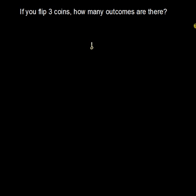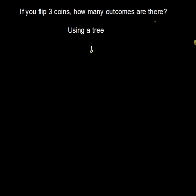We'll use an example. In this example, we ask ourselves: if you flip three coins, how many possible outcomes are there? In order to actually count, we're going to use a method known as a tree. We're going to draw a tree diagram in order to count out how many possible outcomes.